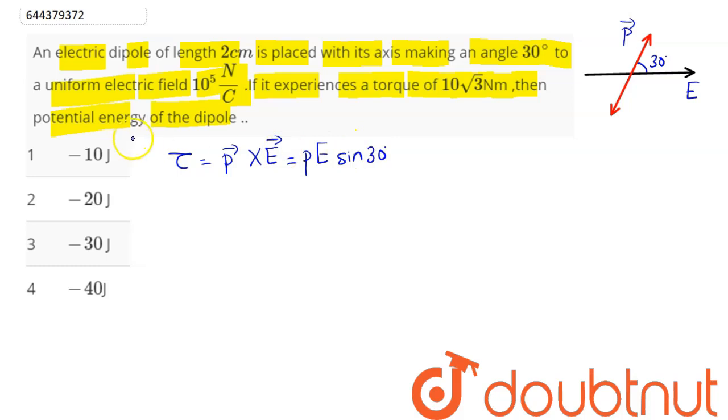We need to find potential energy of the dipole, which here is minus of p dot e, which here comes out to be minus of p into e into cos of theta, which is our 30 degree.